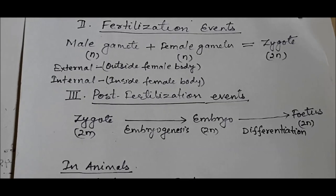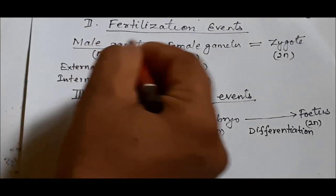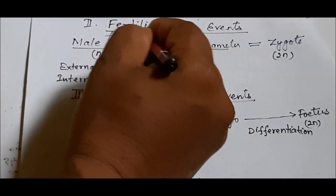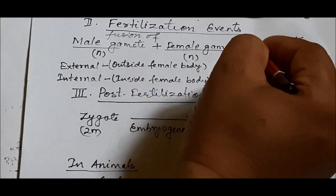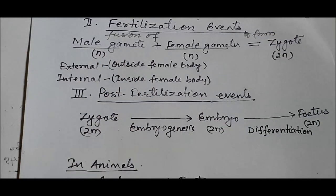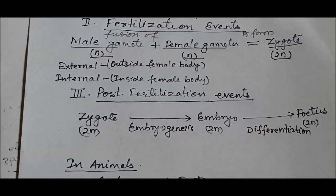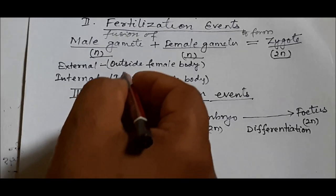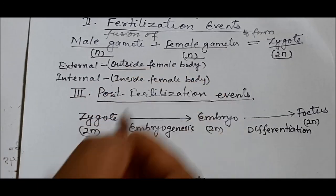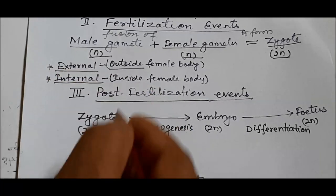In the fertilization event, once male gametes reach female gametes, they fuse to form a zygote. This fusion of male gametes and female gametes to form a zygote is called fertilization. Since both gametes are haploid, the resulting zygote is diploid. Fertilization can take place inside the female body — called internal fertilization — or outside, called external fertilization, as in frogs and fish.